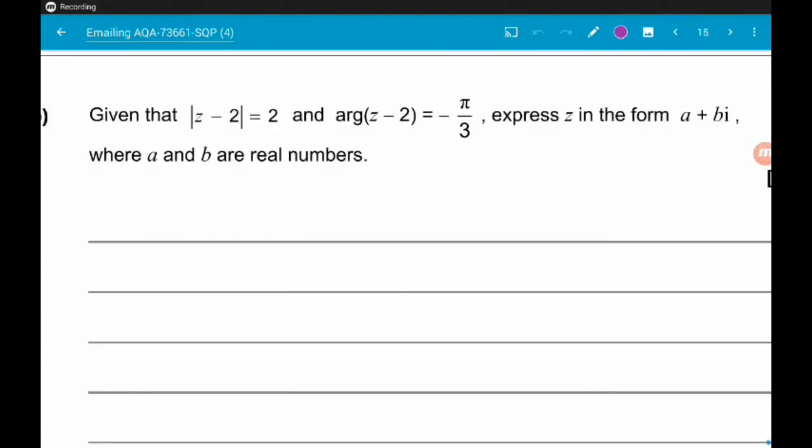Okay, then part B says, given that mod z minus 2 is equal to 2 and the argument of z minus 2 is minus pi over 3, we want to express z in the form a plus bi where a and b are real numbers. For this I'm gonna do most of the working out on the diagram that we just drew.